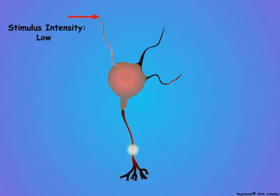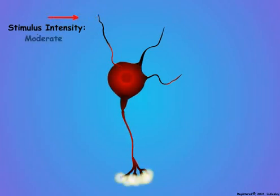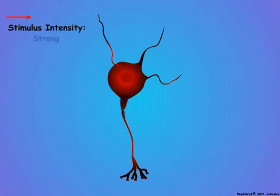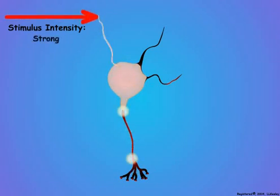A low-intensity stimulus causes a weak receptor potential and a low frequency of action potentials. A moderate-intensity stimulus causes a stronger receptor potential and a higher frequency of action potentials. And finally, a strong stimulus produces a large receptor potential and a high frequency of action potentials in the axon.